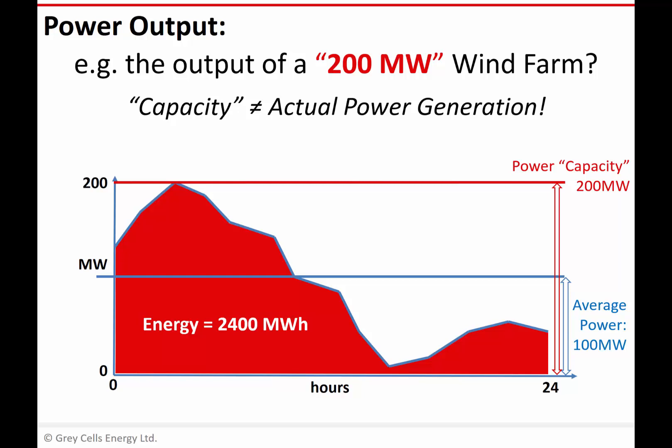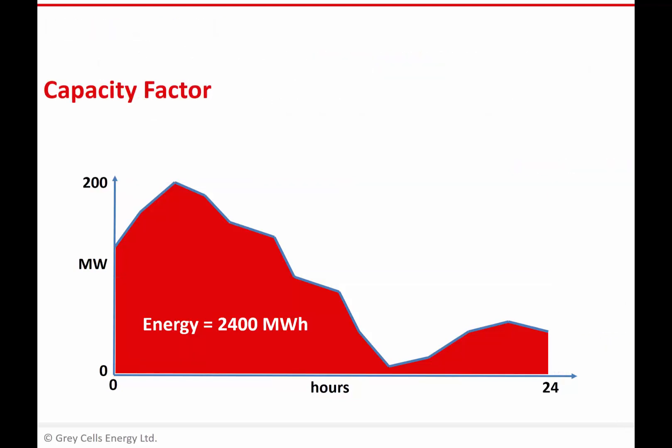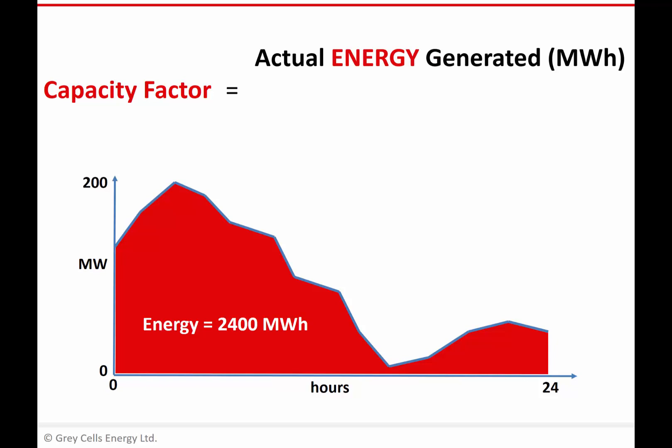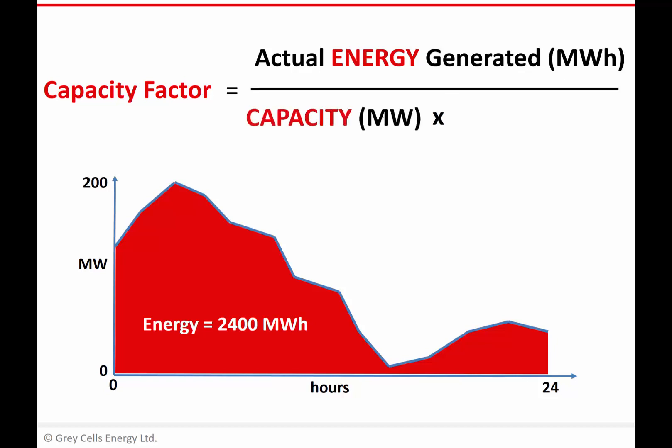This brings us to capacity factor. The power output we're talking about here is the maximum potential power output of the power plant. We can define capacity factor as the actual energy generated over a period of time divided by the capacity of the power plant multiplied by that time period. You can see it's megawatt hours divided by megawatt hours, so capacity factor has no units — it's a dimensionless ratio, most often expressed as a percentage. Importantly, like energy, you can't talk about capacity factor without stating the time period over which you're calculating it.